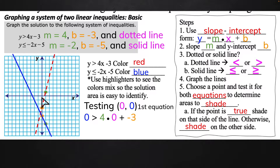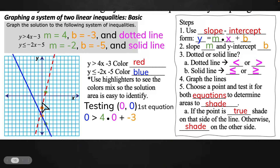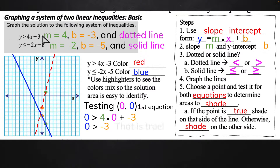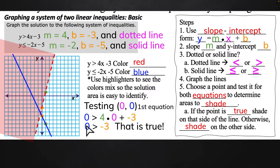Taking a step back to the Y-intercept idea — if I go to the Y-intercept for the red line and it's greater than, that tells me I can go to this point and shade above that line. The same thing for the second equation in blue — it's less than, so I would go below that line. Using the test point: 0 is greater than 4 times 0 plus negative 3. So 0 is greater than negative 3 — that is true. So I shade on that side of the line.